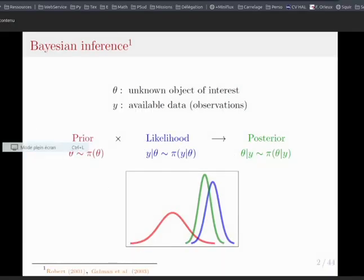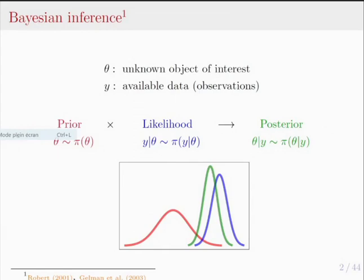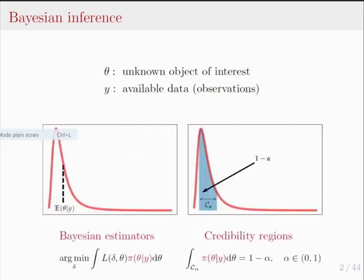Under the Bayesian paradigm, you specify a prior distribution with density pi, which denotes the a priori information you have about the parameter theta you want to infer. You update this prior information thanks to the likelihood function, which via Bayes' rule leads to the so-called posterior distribution — the distribution of your parameter of interest theta given your observations. Based on this posterior, you calculate quantities such as Bayesian estimators or credibility regions.